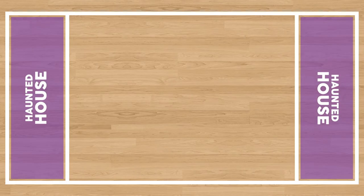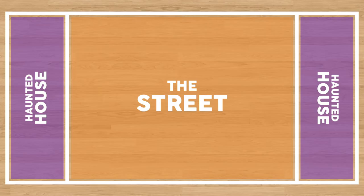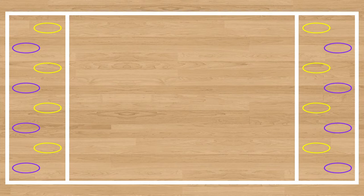In build 1, the teacher will begin by setting up the playing area. To do so, they will divide the area into three sections, with a haunted house on either end of the playing area, and the middle section serving as the street. In each haunted house, the teacher will lay out hoops that are 3 to 6 feet apart from each other. There should be enough hoops for each student in both of the haunted houses.